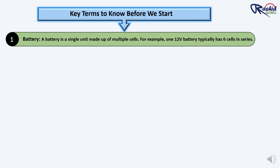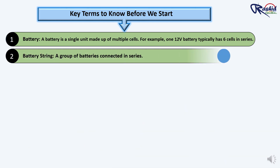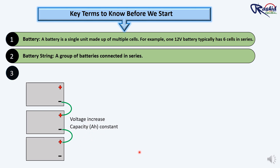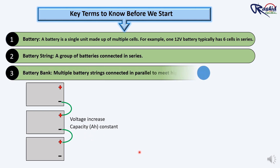A battery string is a group of batteries connected in series. When batteries are connected in series, the voltage adds up, but the capacity — i.e., ampere hour — remains the same.